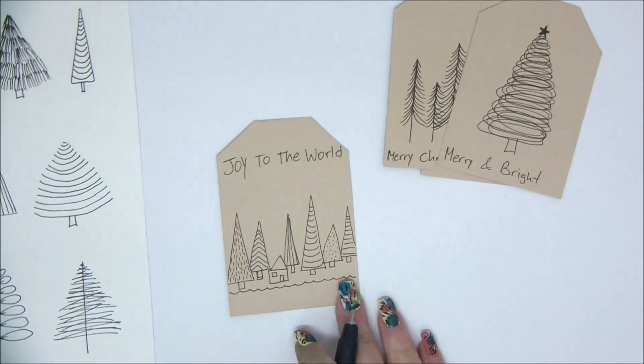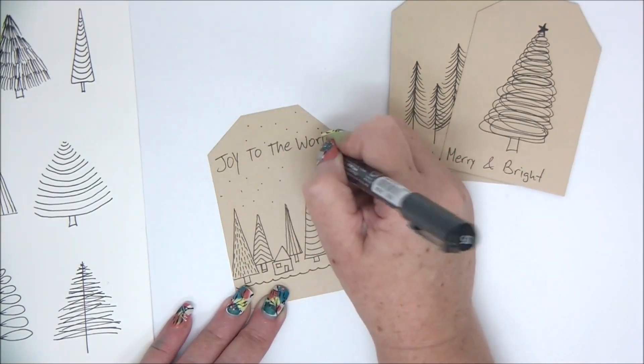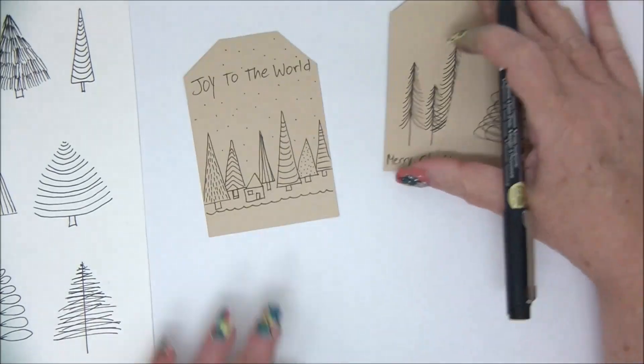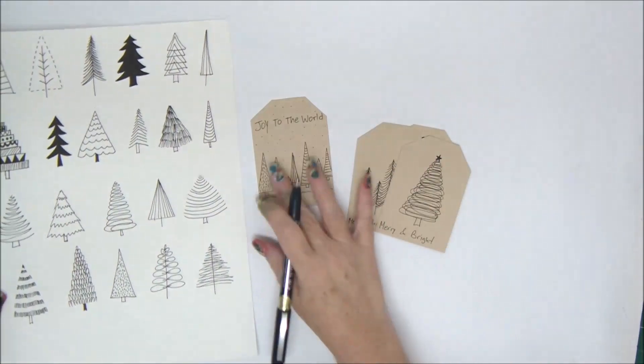And add Joy to the World on the top and some dots for snow. You can add frames around the tags, you can color the trees, you can add any details that you want, maybe some glitter.